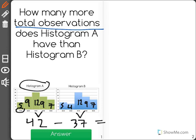And then we find the difference to find out that histogram A has 5 more total observations than histogram B.